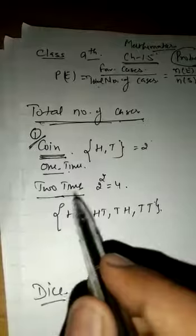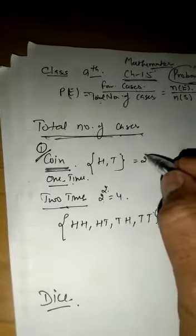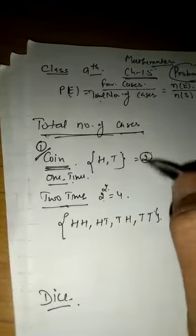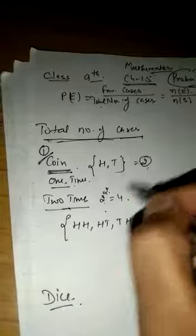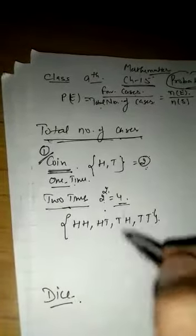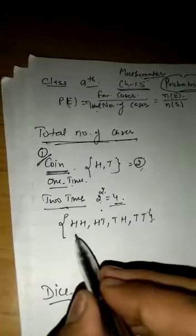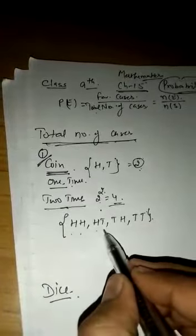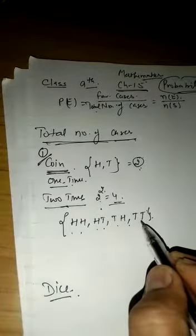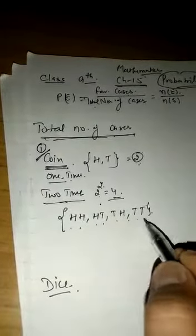In the first case, in one time, the number of cases then we power them. The outcomes are four—four outcomes we have: head-head, head-tail, tail-head, tail-tail. These are the four outcomes.